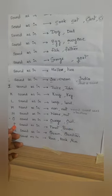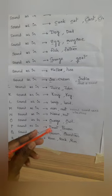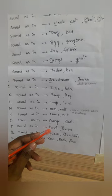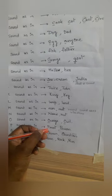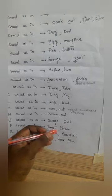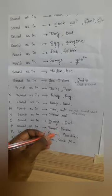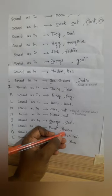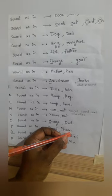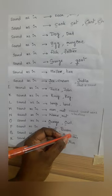Coming to P, the sound of this letter is 'p' — P, A, R, R, O, T — it's parrot. It's not 'parrot', it's parrot. Coming to this word P, E, R, S, O, N — person. It's not 'person', it's person.